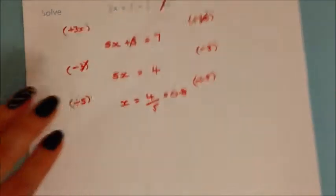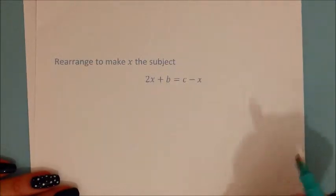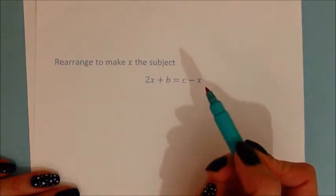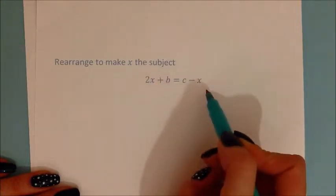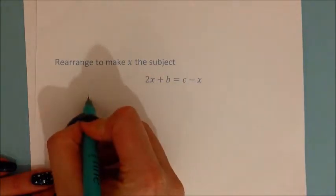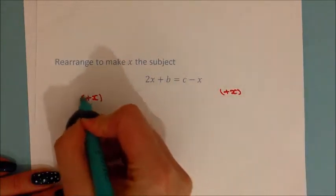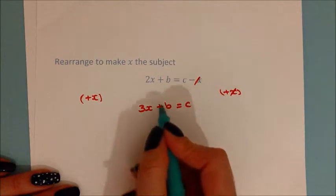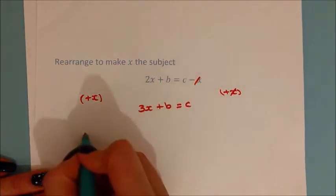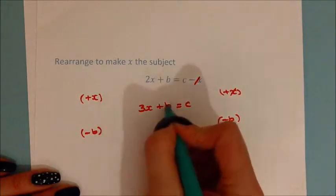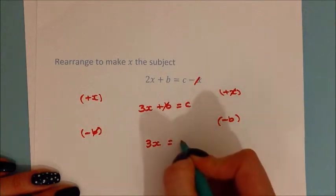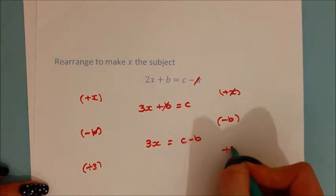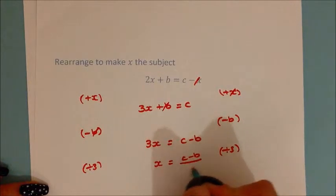Looking at an algebraic equation in the same format with x on both sides: we have a minus x and a plus 2x, so it makes sense to add x to both sides so we get positive 3x. Adding x gives 3x plus b on the left, and the x cancels on the right, leaving c. We then subtract b from both sides to get 3x equals c minus b. Dividing by 3 gives x equals c minus b, all divided by 3.